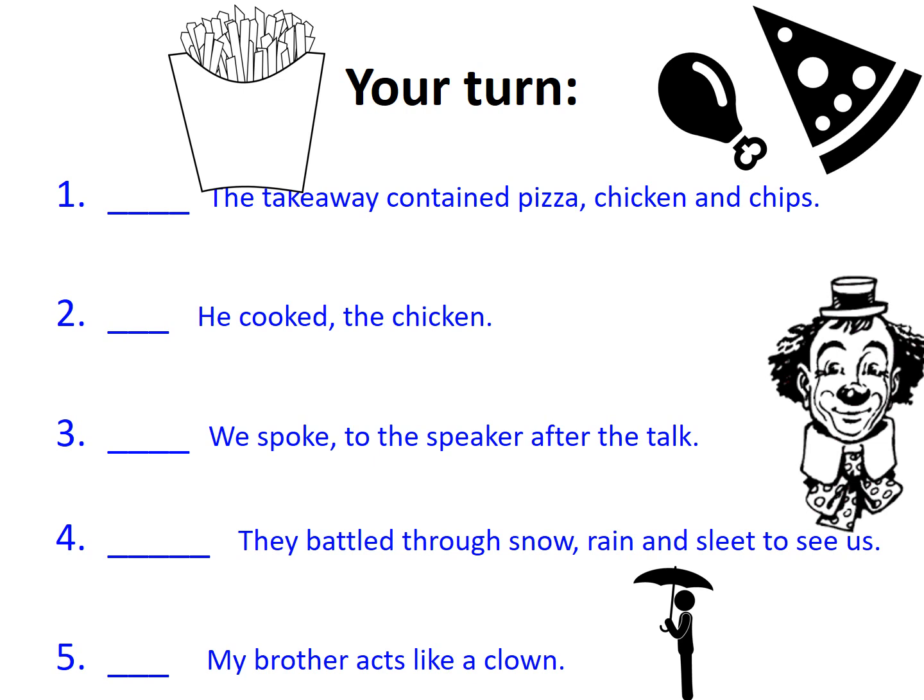I hope the chicken and the chips weren't on the pizza, but forget that for now. This is correct because the subject of the sentence is 'the takeaway' and then we're listing the items it contained. The reason we have a comma between pizza and chicken is because we are listing, and that will come up in video 11.2 as to why we do that in that position.